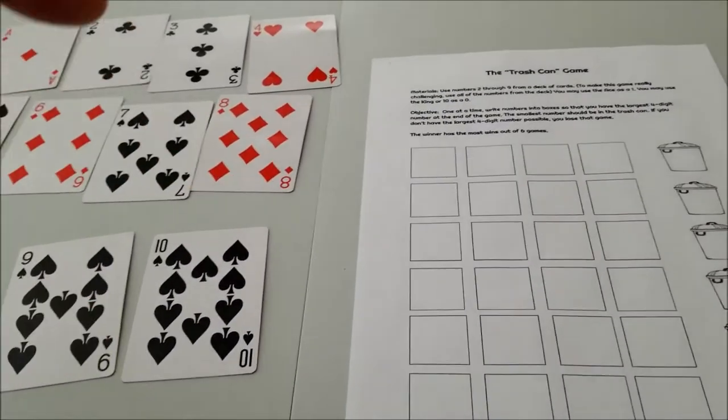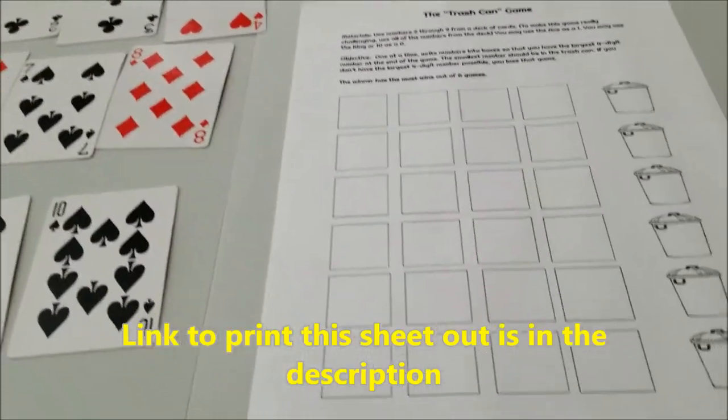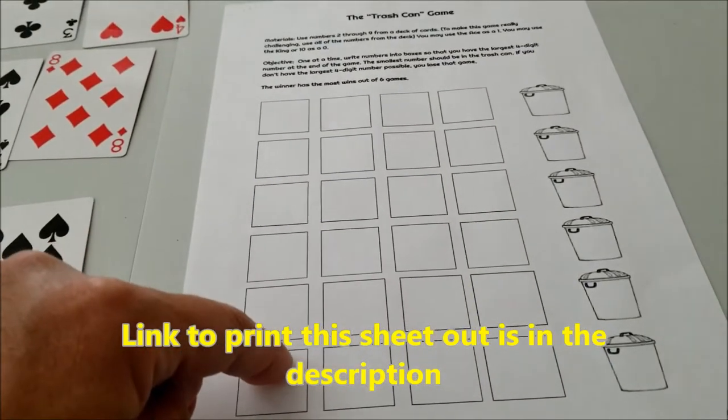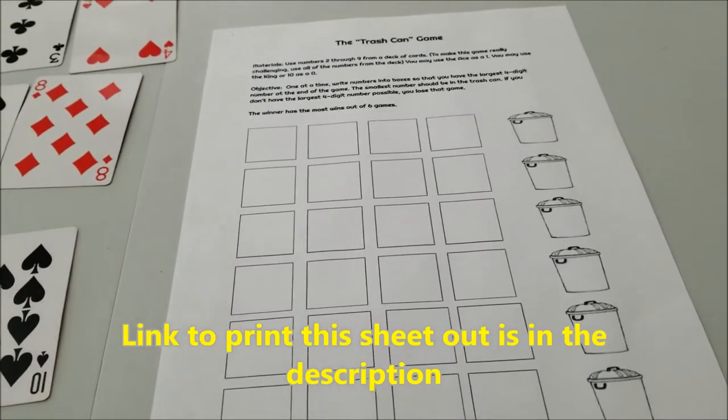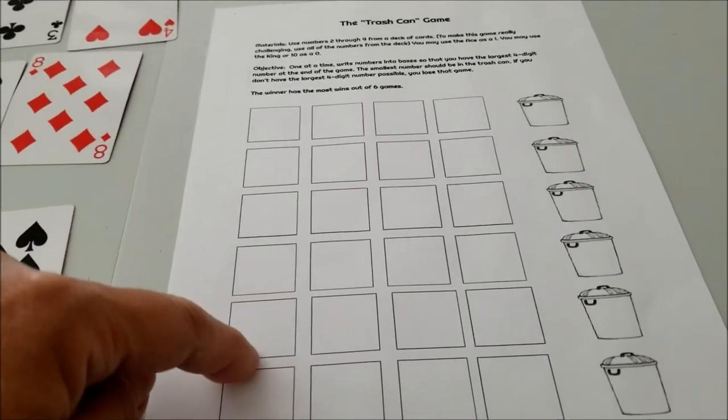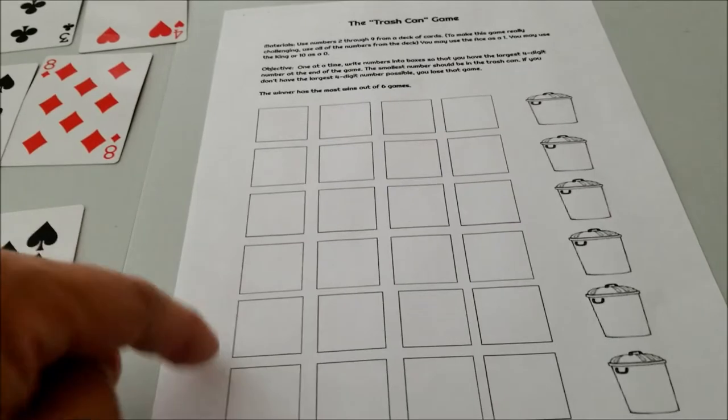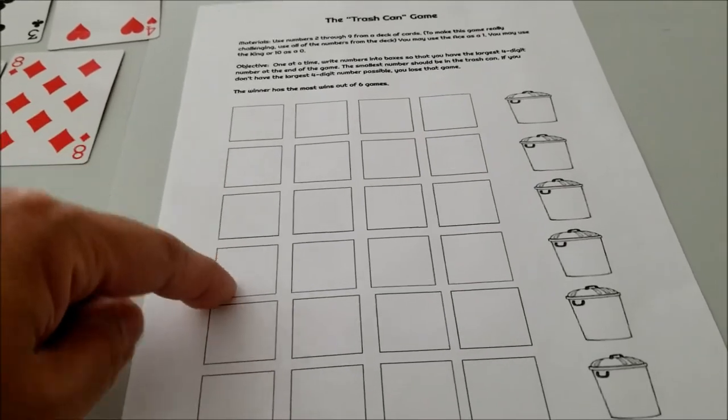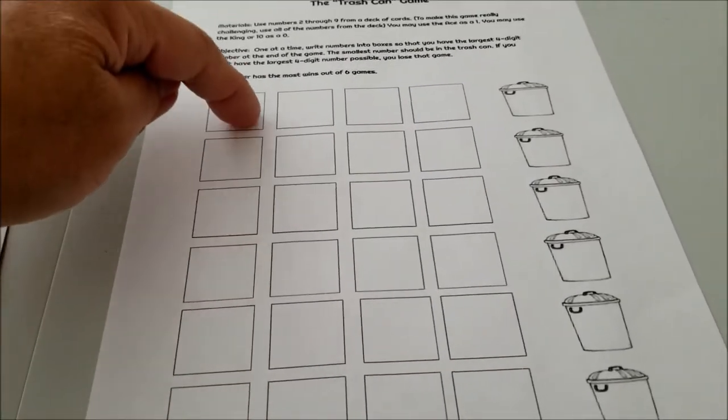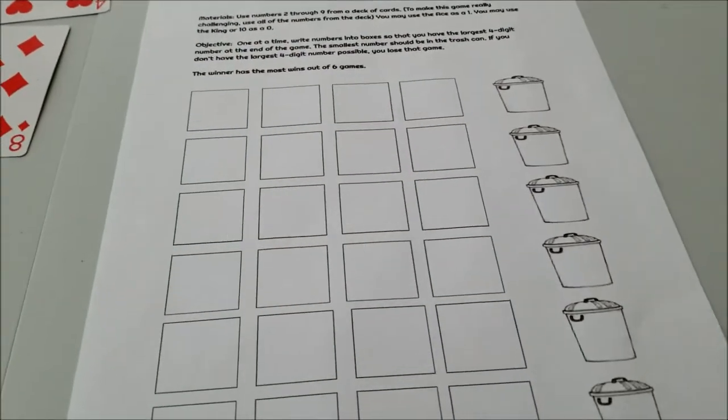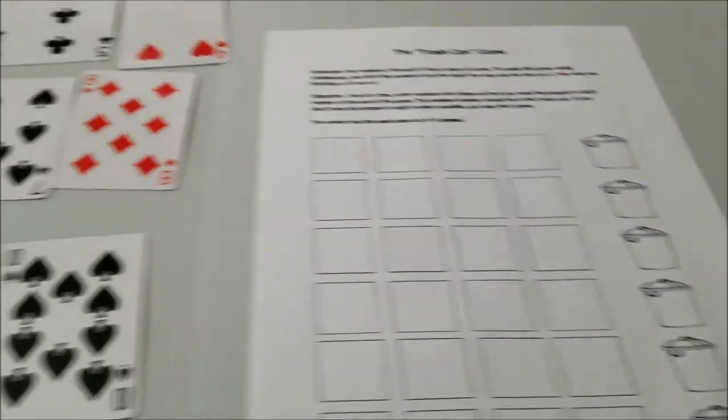Okay guys, so check the description for a link on printing this. I made this on a Google Doc. I made it so that anybody who clicks the link can print this for themselves. But again, if you don't have a printer or don't want to print it, you can just get a piece of paper and just draw four boxes and a trash can. No big deal. That's all I did.